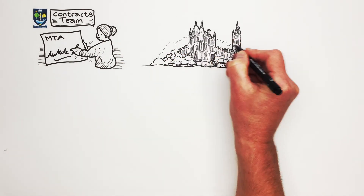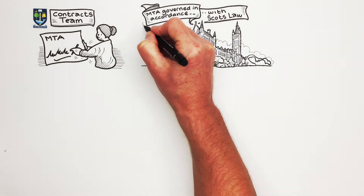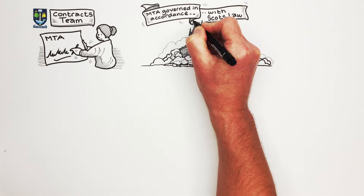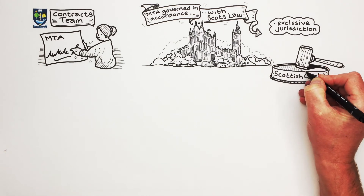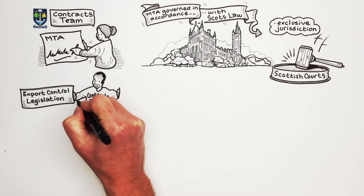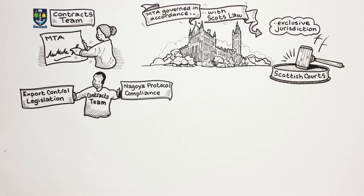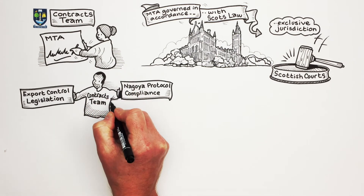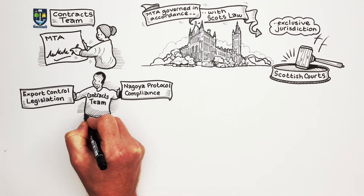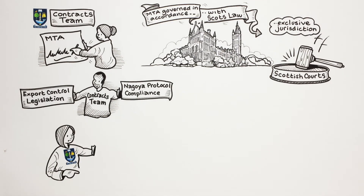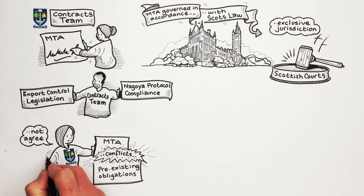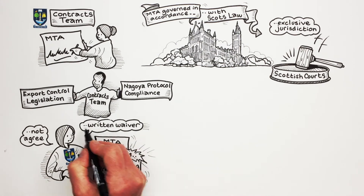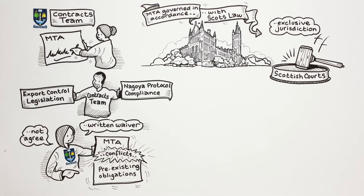The university will, in the first instance, seek that an MTA is governed in accordance with Scots law and that parties submit to the exclusive jurisdiction of the Scottish courts. The contracts team can also advise on export control legislation of materials as well as Nagoya Protocol compliance for the fair and equitable sharing and utilisation of genetic resources. The university will not agree to an MTA that conflicts with any pre-existing obligations to research sponsors and any other third parties without a written waiver obtained from the party with pre-existing contracts.